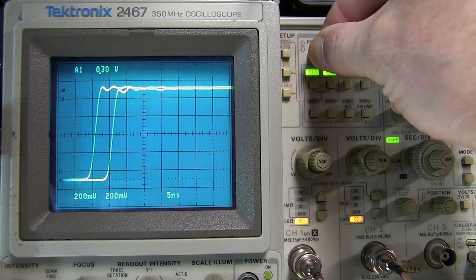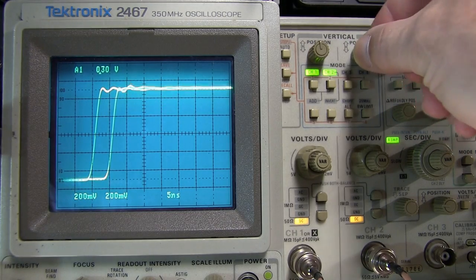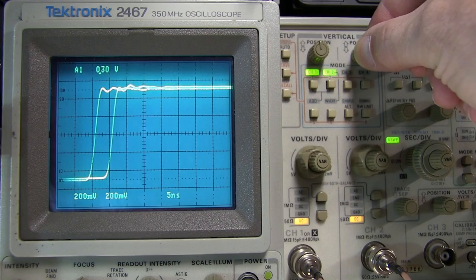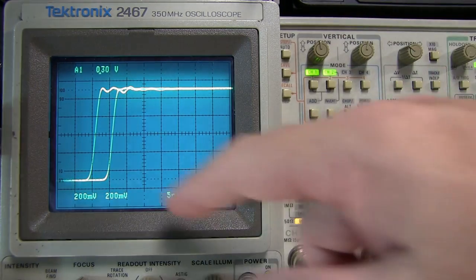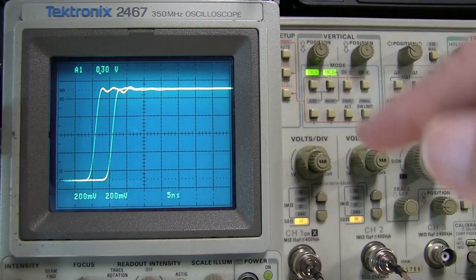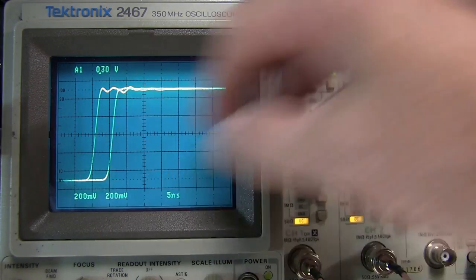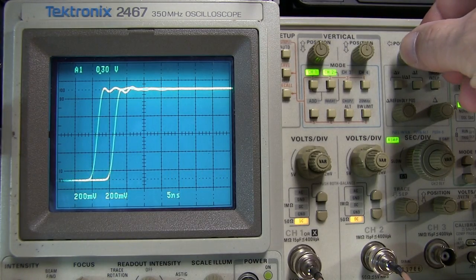With an analog scope, you kind of have to sometimes remind yourself which trace is which, channel 1 or channel 2, because they're all the same color. So we line them up on top of each other, and I've got them centered at the center graticle here. We can actually see where those two cross the center graticle.